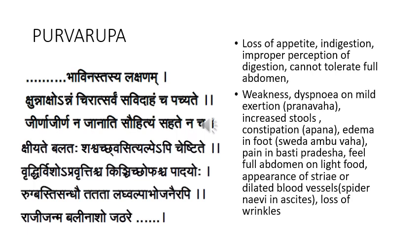Jirna jirnam na jana adhi — improper perception of digestion; the person cannot perceive whether digestion is proper or not. Sautyam sa hadena cha — he cannot tolerate when the abdomen gets full. Then kshiyade baladaha cheshwata — sudden weakness starts manifesting. Svasitye alpe bicheshthide — dyspnea on mild exertion, alpe bicheshta, svasa — includes involvement of pranavaha srotas.